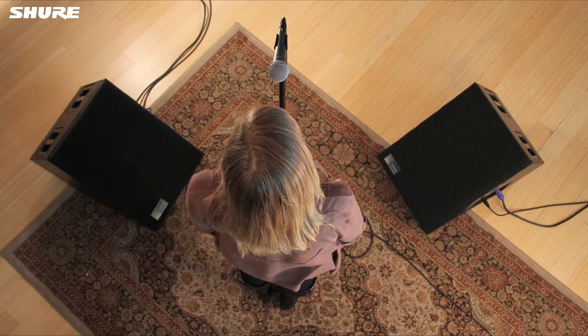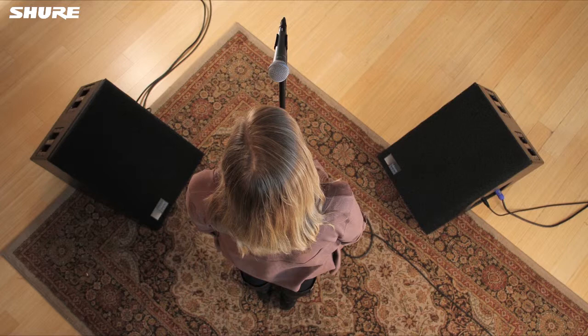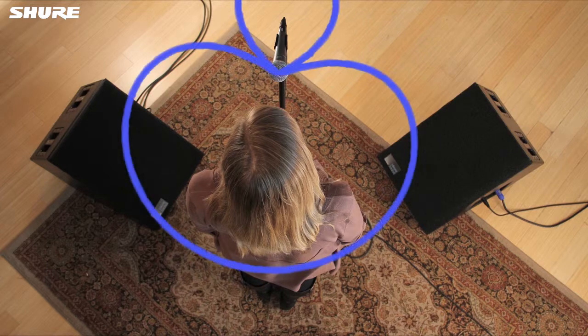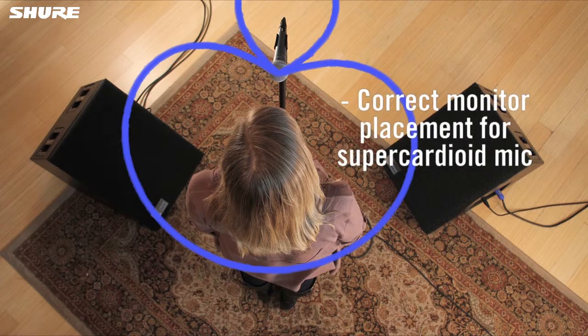With a super cardioid mic like the Beta 58, floor monitors should be placed slightly to the sides of the mic stand. This way, they're aimed at the least sensitive part of the microphone's polar pattern. This arrangement allows a super cardioid mic to deliver more gain-before-feedback than a cardioid.